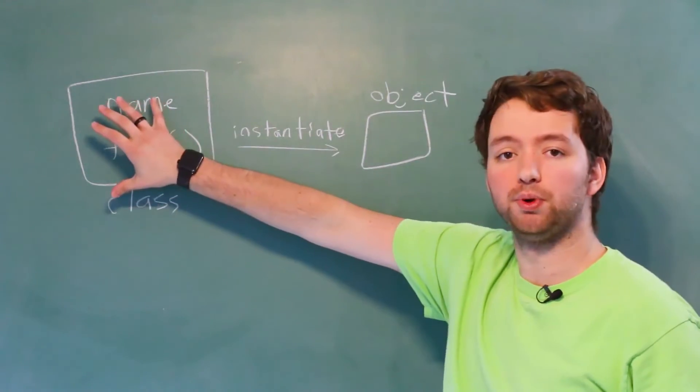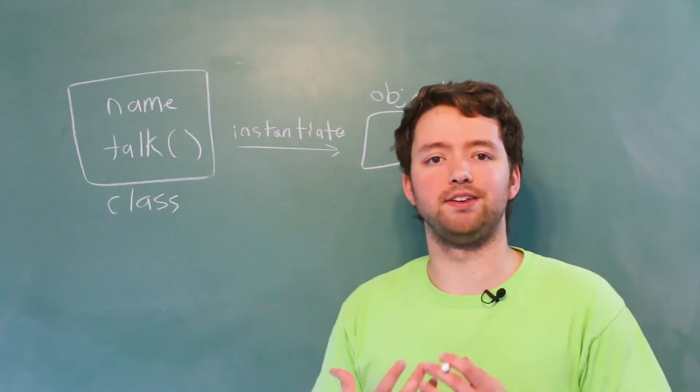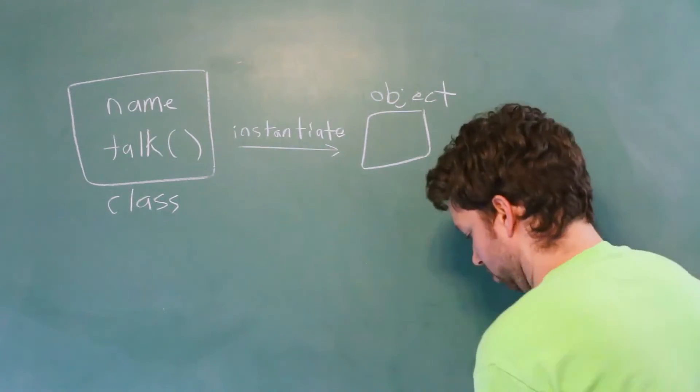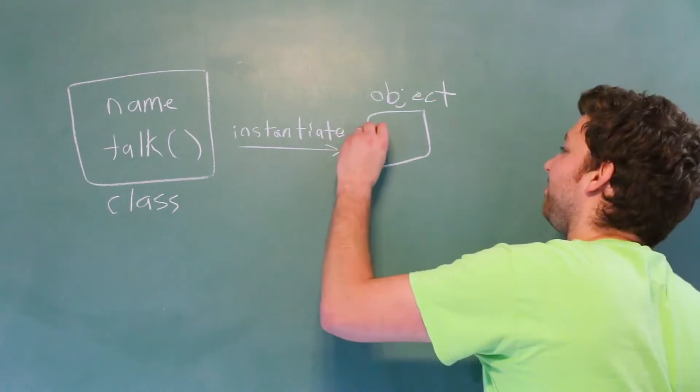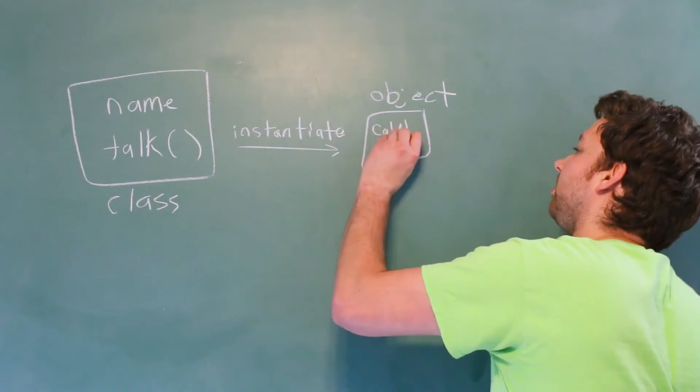So the class is the blueprint. The object is going to be a specific example. For example, we have Caleb.